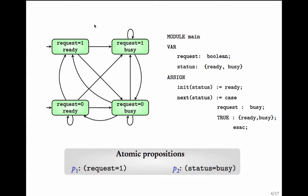Given these two atomic propositions, let us evaluate these propositions on the states. In this state, request is 1, so p1 is true. However, p2 is false as status is ready. In this state, both p1 and p2 are true. In this state, p1 is false but p2 is true. And in this last state, both of them are false. Given the SMV code, we defined these atomic propositions and then evaluated them on the transition system.